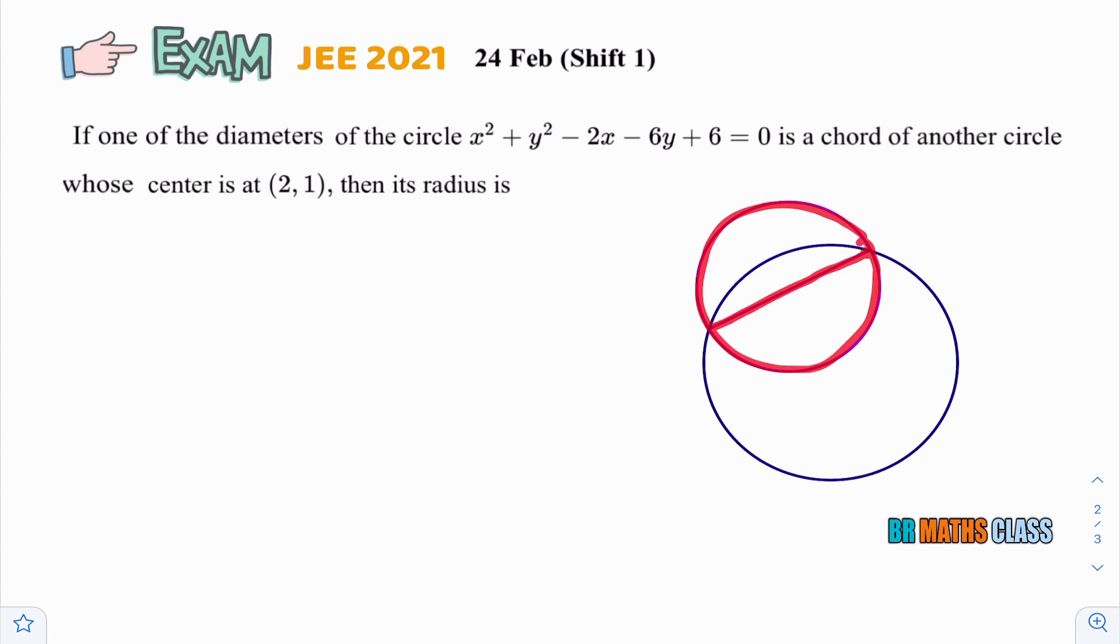One of the diameter of this circle is chord of another circle. You observe this is the diameter of first circle. Actually, this is chord of second circle. And for the second circle, center is at (2,1). Then its radius is, that means they're asking second circle radius.